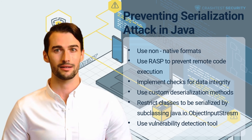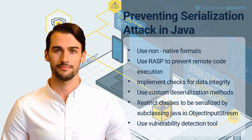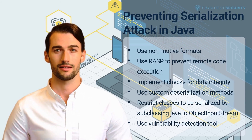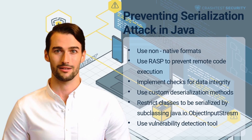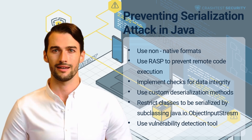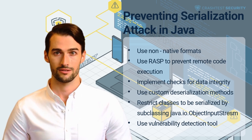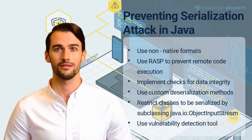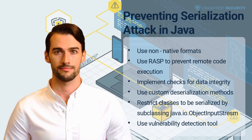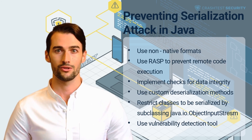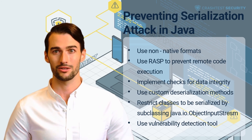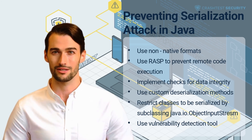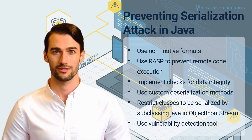Implement checks for data integrity and deserialize signed data: Complement blacklisting and pattern matching techniques with signature-based positive validation techniques to ensure user-provided data is trustworthy. Additionally, implement sufficient authorization and authentication checks to verify the source of the input byte stream before deserializing it. Use custom deserialization methods: OWASP provides a cheat sheet with guidelines on building custom serialization and deserialization code to enumerate safe validation methods, ensuring the application is free of untrusted data.